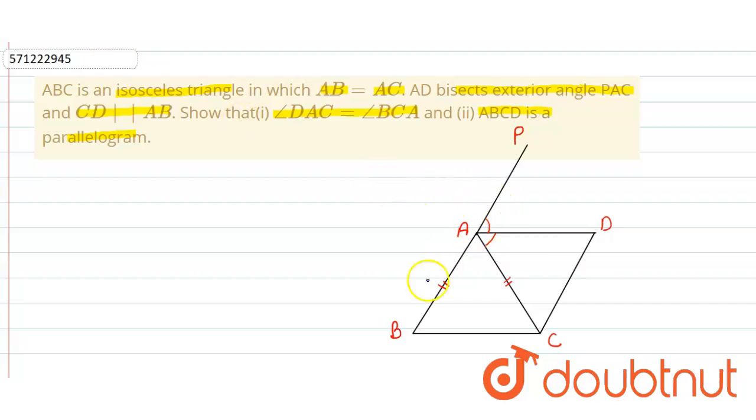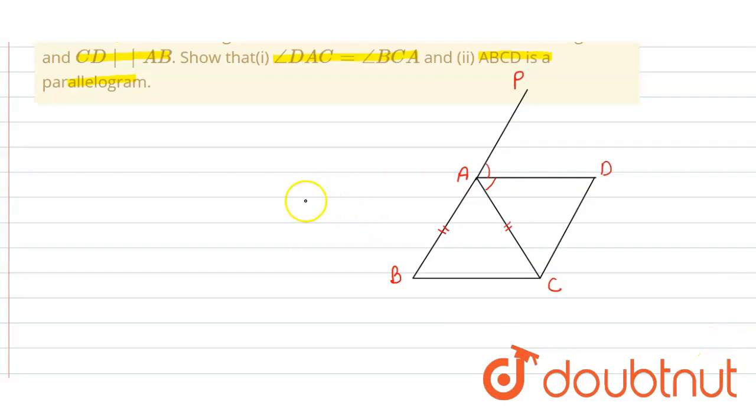So here as you can see in the given figure, ABC is an isosceles triangle. So we know that angle ABC is equal to angle ACB because the angle opposite to equal sides will be equal.